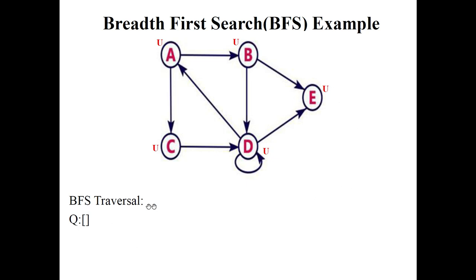BFS traversal will be performed. The queue Q is initially empty. We start with node A. A is marked as visited and inserted into Q.